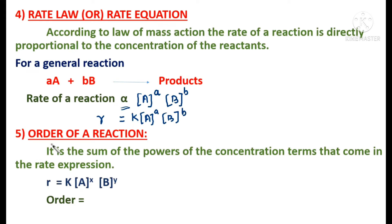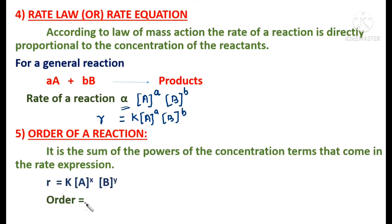What do you mean by order of a reaction? It is the sum of the powers of the concentration terms that appear in the rate expression. For the rate expression R = k[A]ˣ[B]ʸ, the order of the reaction is x + y. Normally the order of a reaction can be zero, a whole number, or even a fraction.